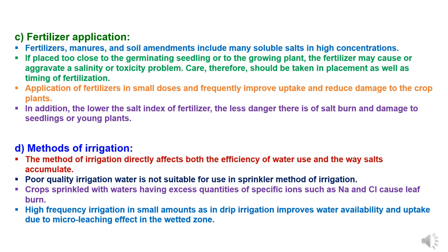Fourth method is methods of irrigation. Poor irrigation water quality is not suitable for the sprinkler method of irrigation because it may cause leaf burning due to presence of excess salts of sodium and chloride. Drip irrigation method is best suitable as it improves water availability and uptake due to micro-leaching effects in the wetted zone for longer time.